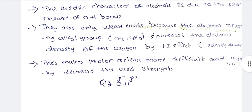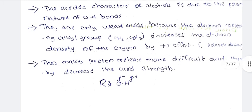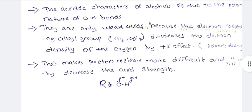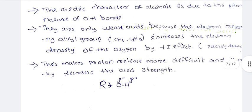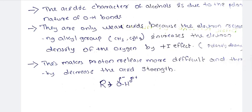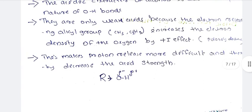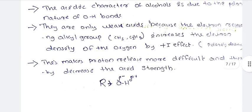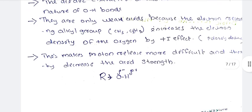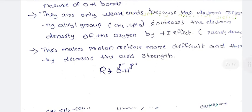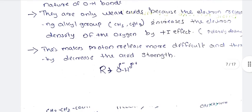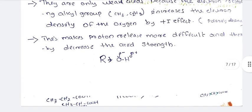A proton is created, giving an acidic nature. This is the electron-releasing nature of the alkyl groups. Because of the increased oxygen electron density, alkyl groups make proton release more difficult, which results in a decrease in acidic strength.